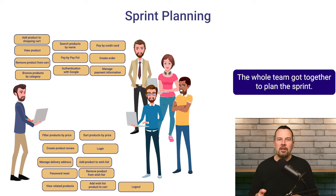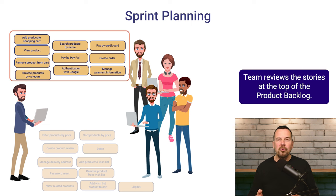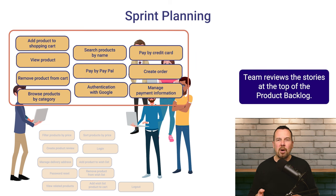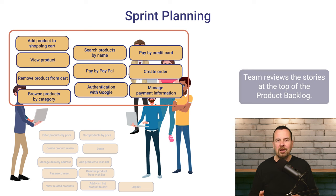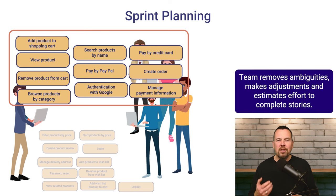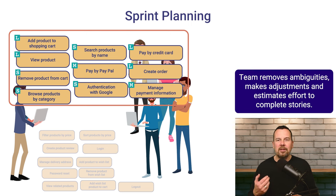The product owner created a solid number of user stories, and the team got together to plan their sprint. The whole team will review and discuss stories at the top of the product backlog, which are the most important stories. During the discussion, the team will remove any ambiguities, make necessary adjustments to the stories, and estimate the effort required to complete each one.